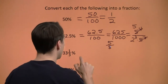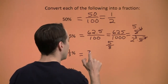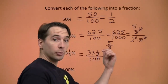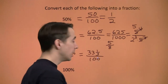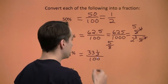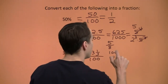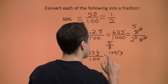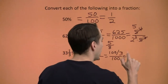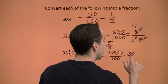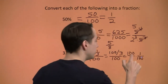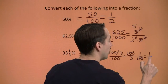Now 33 and 1 third percent — again we write this as per 100: 33 and 1 third over 100. Writing the numerator as an improper fraction: 33 times 3 is 99, plus 1 gives 100 thirds divided by 100. Dividing by 100 is the same as multiplying by 1 over 100. The 100s cancel, and we're left with 1 third.